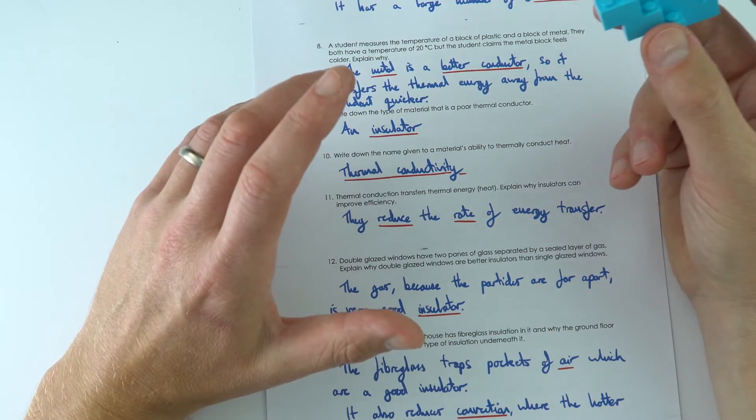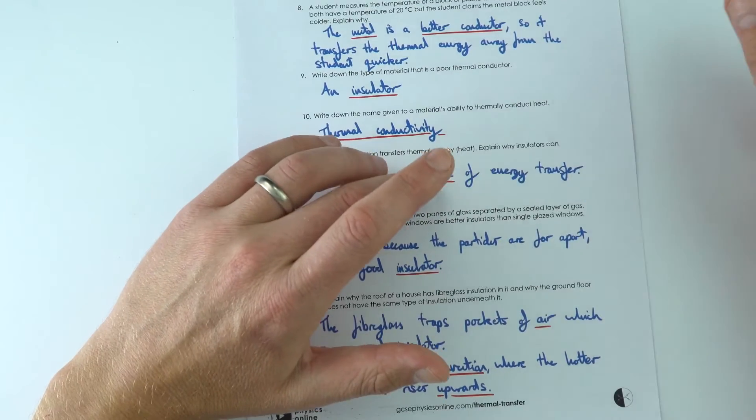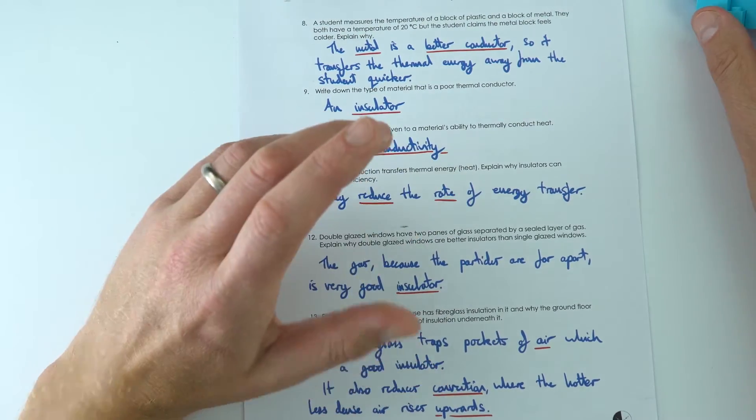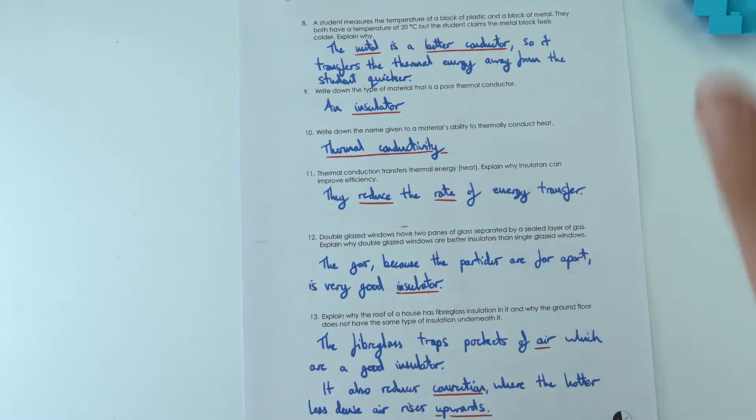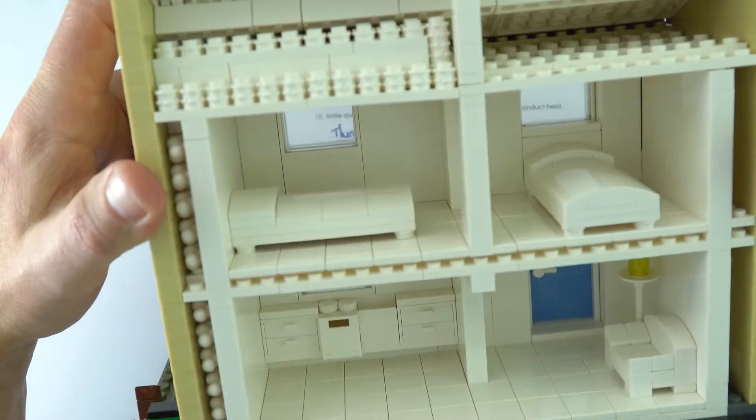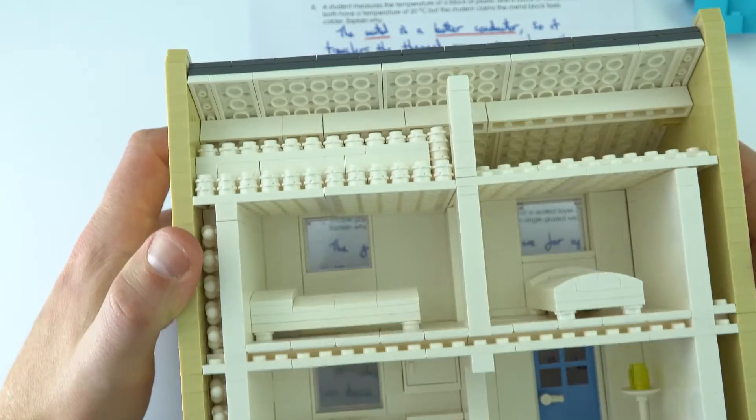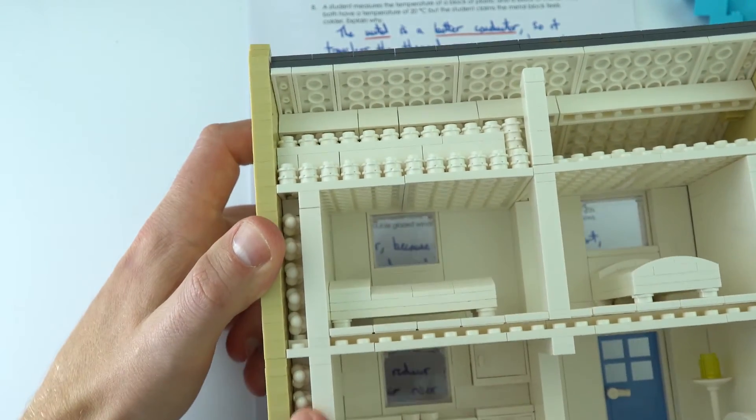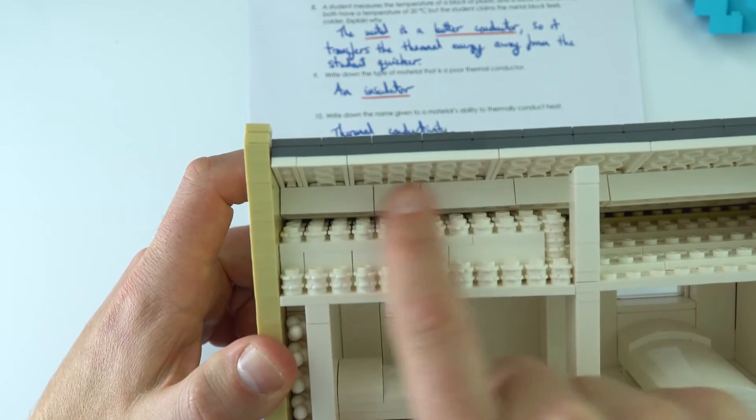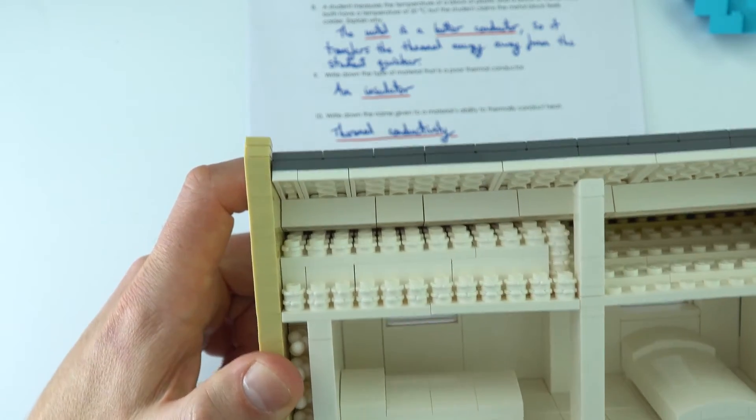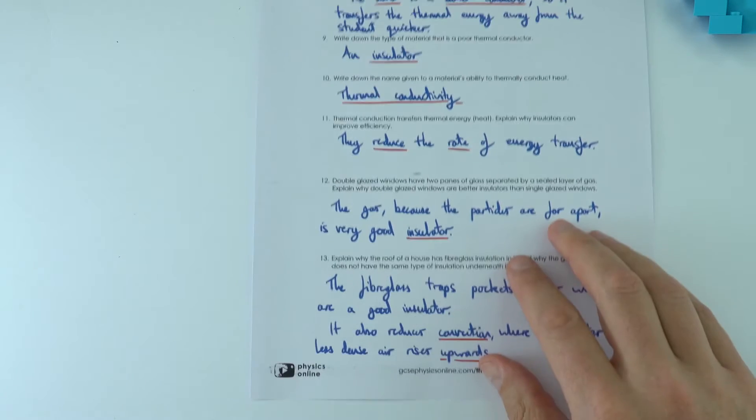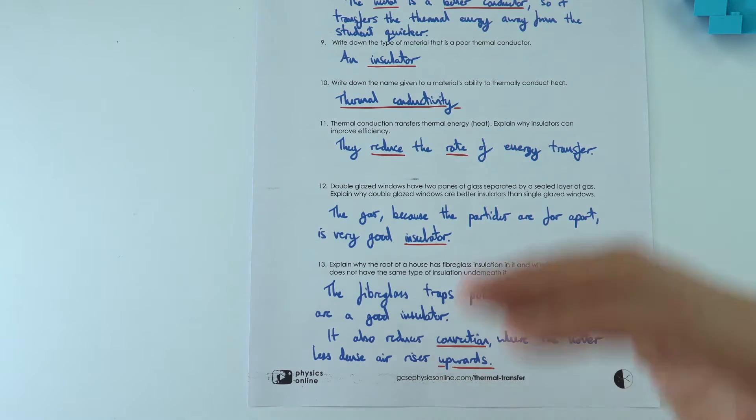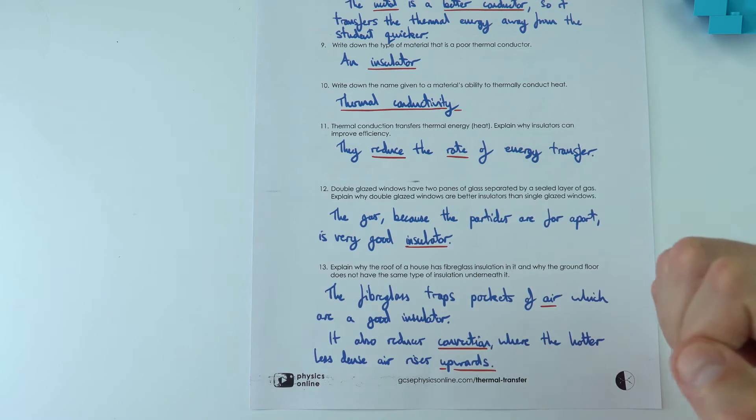And actually thermal conductivity just tells us about the rate of energy transfer. So what you want to have sometimes, especially in things like your home, is you have certain things which are designed to reduce the rate of thermal transfer. It might be cavity wall insulation inside the walls, it might be some loft insulation that means that you could trap pockets of air, and what that does then is it reduces the rate of energy transfer to the surroundings, so you need to spend less money heating your homes.